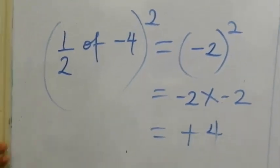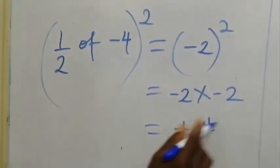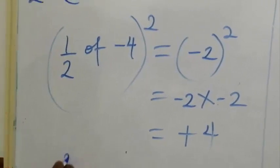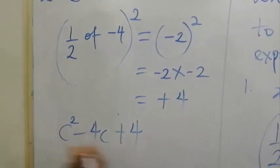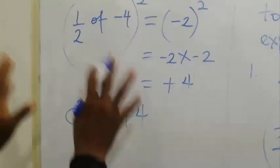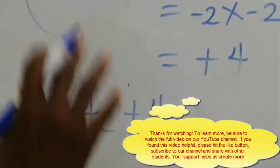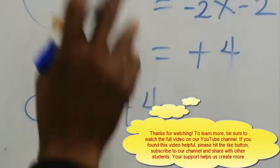So what must be added to this to make it a perfect square is plus 4. Then we have c squared minus 4c plus 4. This expression is a perfect square. That is the second step on completing the square method.